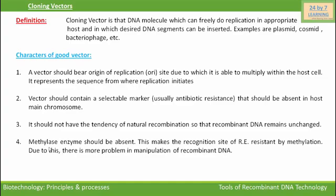A good vector should not have methylase enzyme, as this makes the recognition site of restriction enzymes resistant by methylation, causing more problems in manipulation of recombinant DNA. These are the main characters of a good vector, but no natural DNA molecule is a good vector. Thus, vectors used in cloning are produced by attaching useful segments of different natural DNA molecules, by which some most useful and new vectors are obtained.